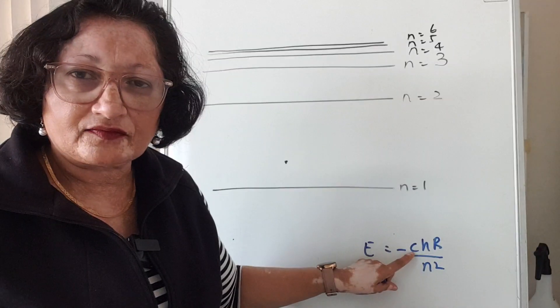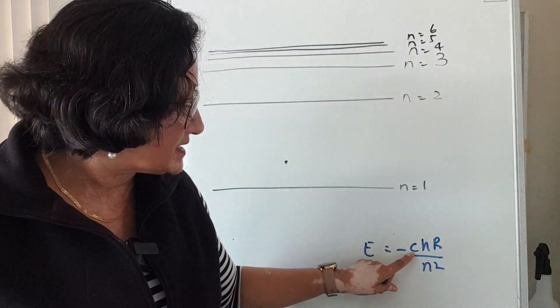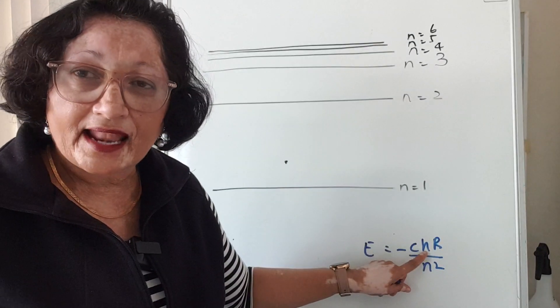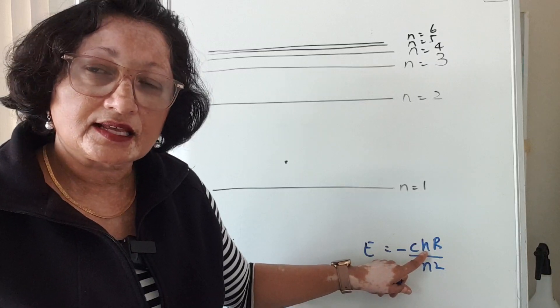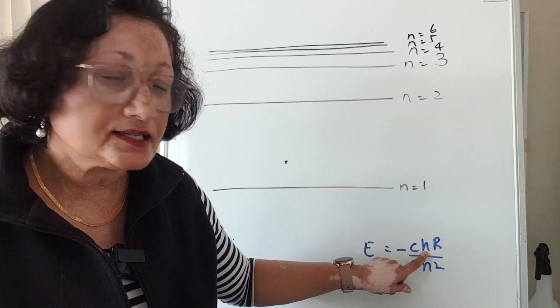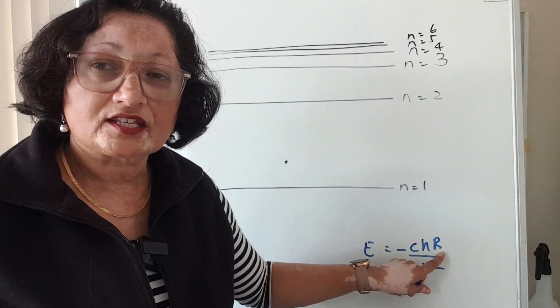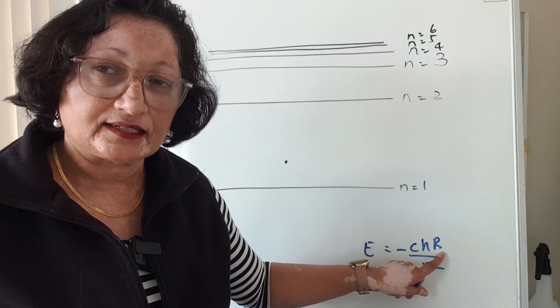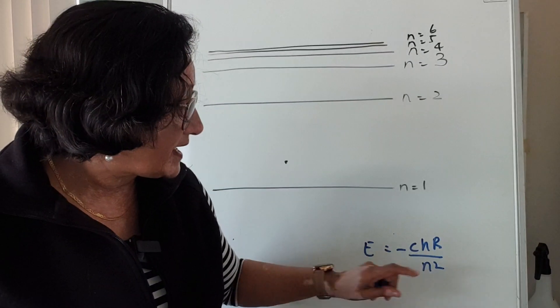H is Planck's constant which is 6.626 times 10 to the power of negative 34 joule seconds. And R is called Rydberg's constant which is 1.097 times 10 to the power of 7 per meter, and n is the quantum number.